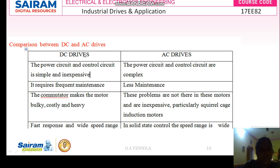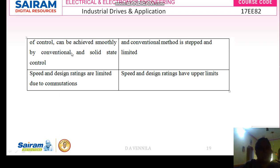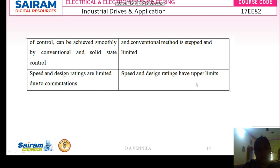In DC drives, there is fast response and a wide speed range. But in AC drives with solid state control, the speed range is wide but fast response is limited. The speed and design ratings are limited in DC drives due to commutation. This is very important — because of commutation in DC drives, the speed and design ratings are limited. But in the case of AC drives, the speed and design ratings have a very high upper limit.